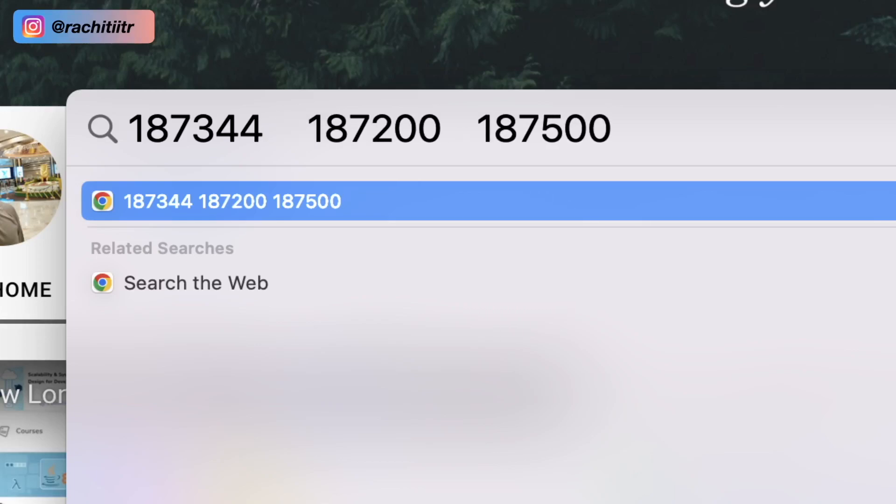What's essentially happening is I performed these three reads and all the reads were redirected to different replicas. The first replica showed the subscriber count to be 187344. When I performed the second read operation, I got redirected to a different replica which was having a subscriber count a little stale, maybe a two-day-old value which was 187200. Then the third read was redirected to a newer replica which was having the latest information, and that's why I was able to see 187500.